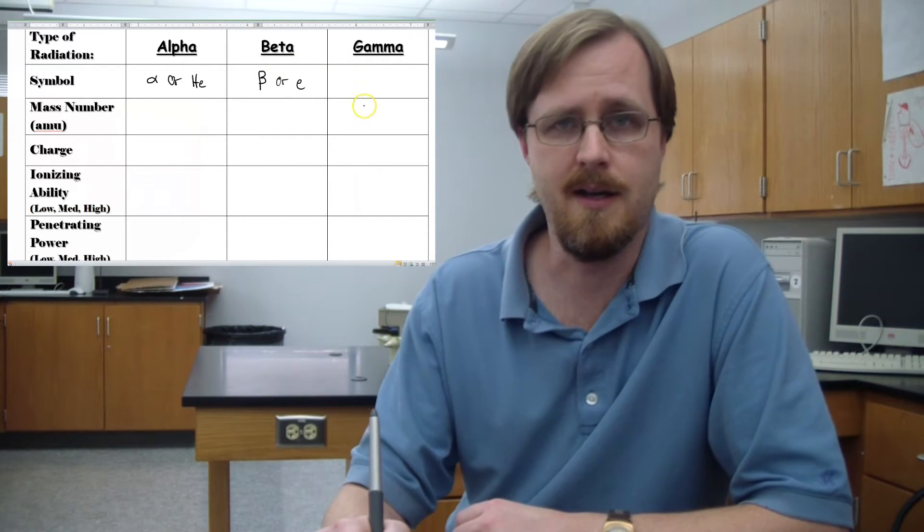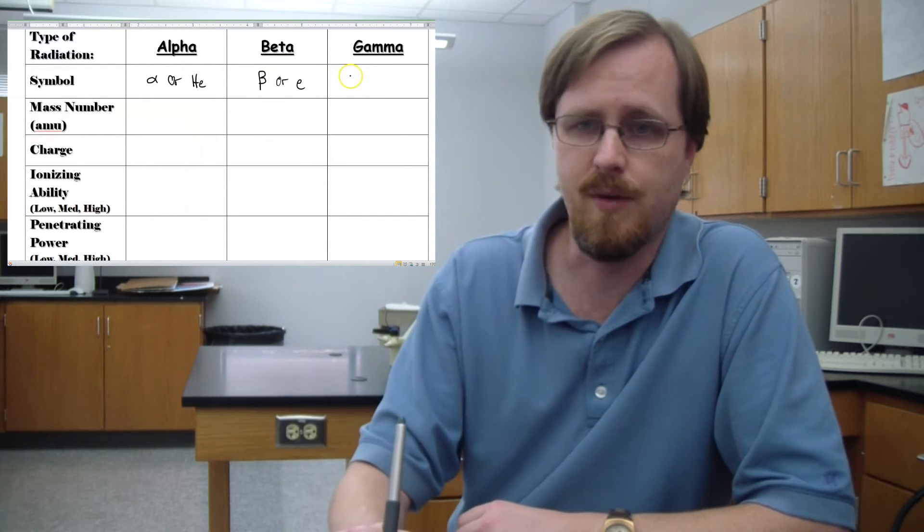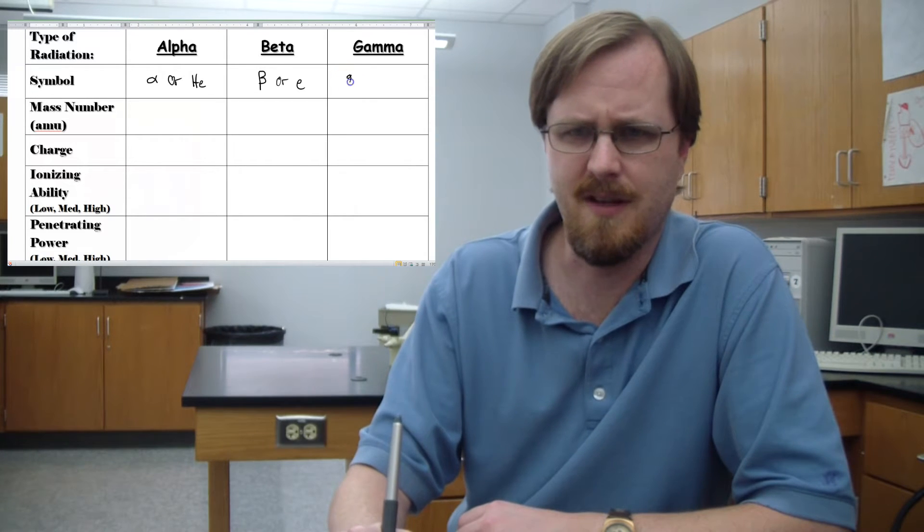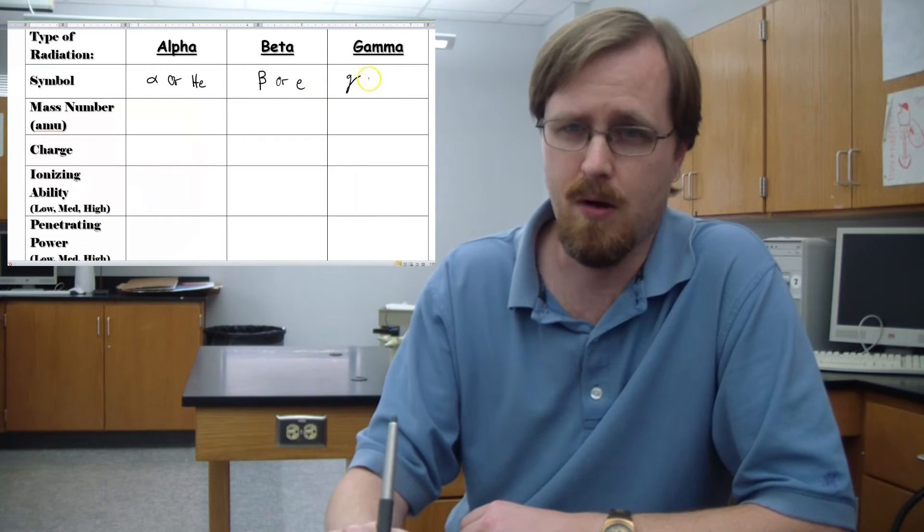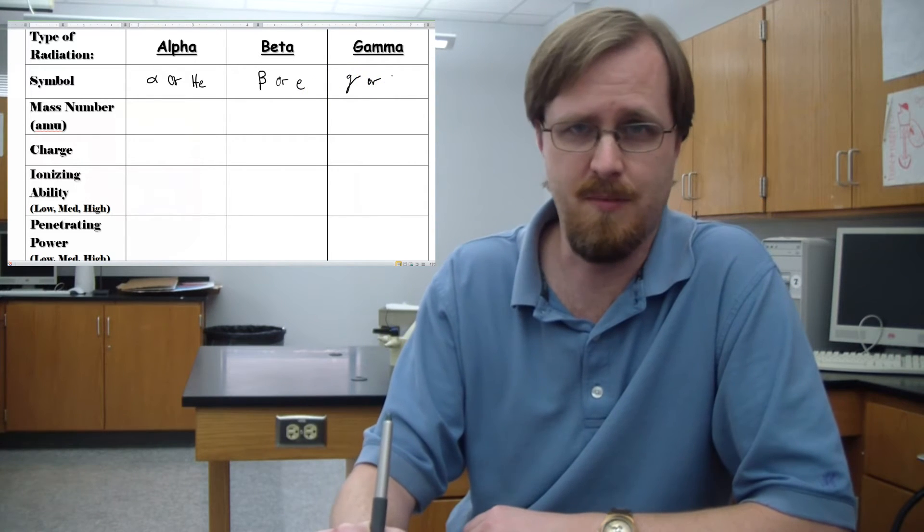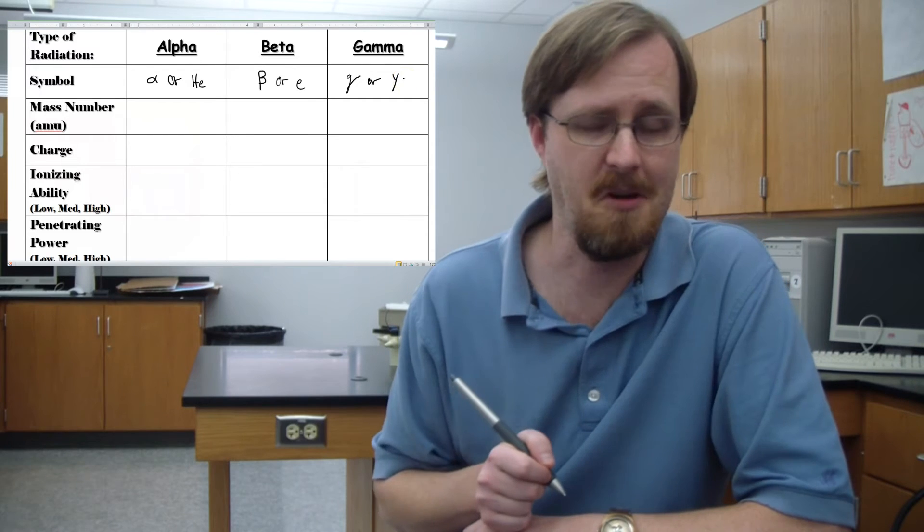Now for gamma rays, the Greek letter gamma is kind of like this little Y with a flourish on it. Or if you're like me and you just want to be really simplistic about it, just put a Y.